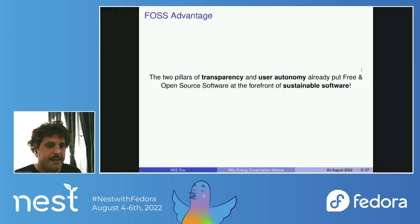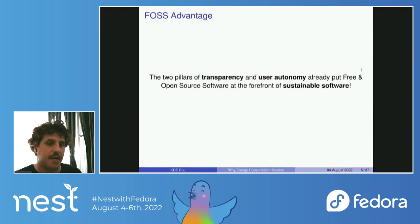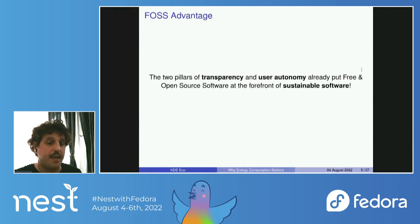The main takeaway message is that the two pillars of free and open source software — transparency and user autonomy — already put free and open source software at the forefront of sustainable software design. The Blue Angel Ecolabel, which is the official ecolabel of the German government, also recognizes the values of transparency and user autonomy as being crucial for a sustainable digital future.